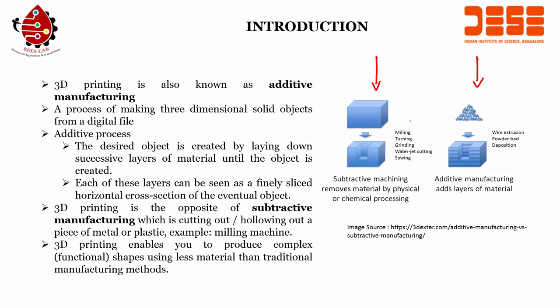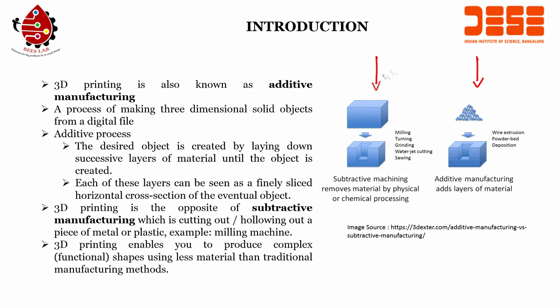In subtractive manufacturing, you take a block and remove part of it by physical or chemical processing. This can be milling, turning, grinding, water jet cutting, or sawing. In any way that you are cutting material from a block, you are subtracting that material — hence subtractive manufacturing.